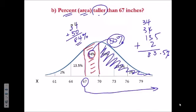And that gives 84 percent. So, these numbers are all approximate. So the percent of the men that are taller than 67 inches would be 84 percent.